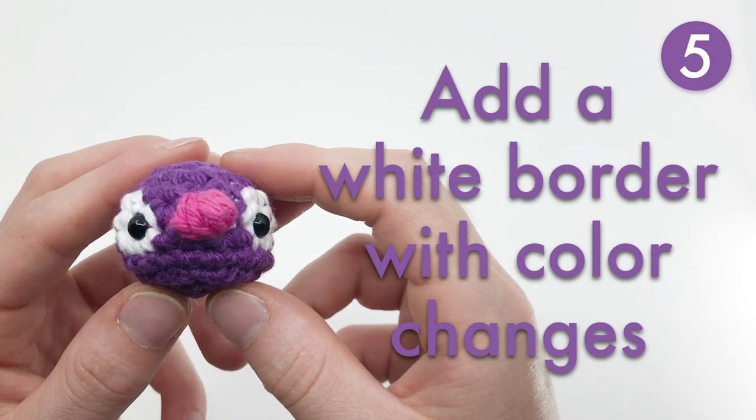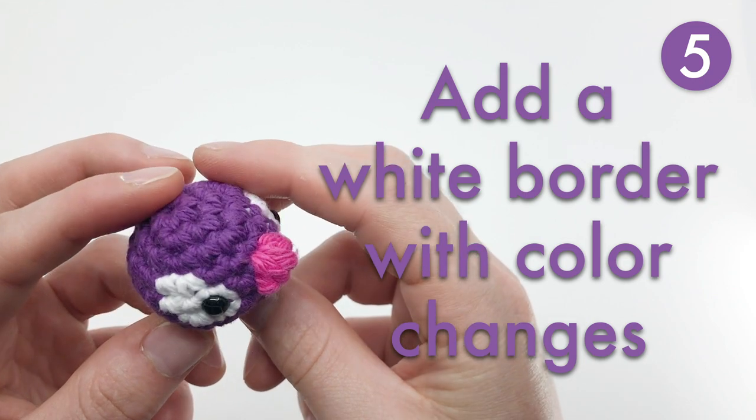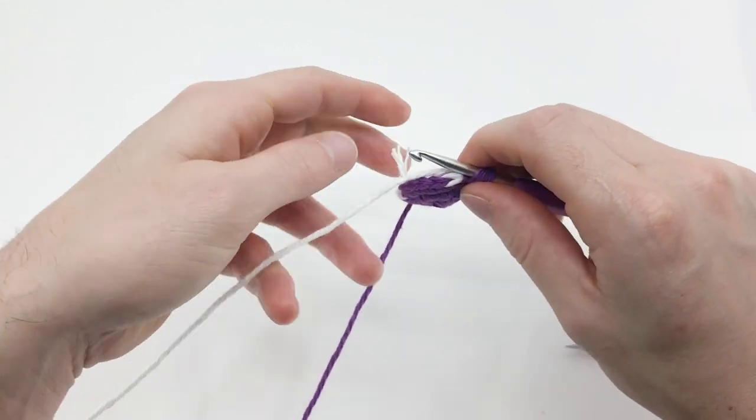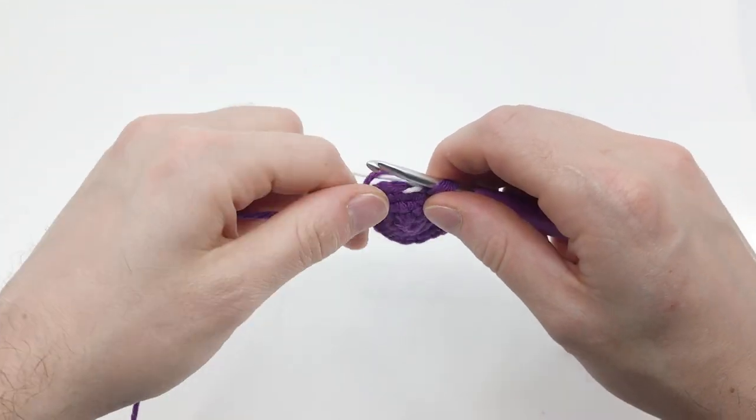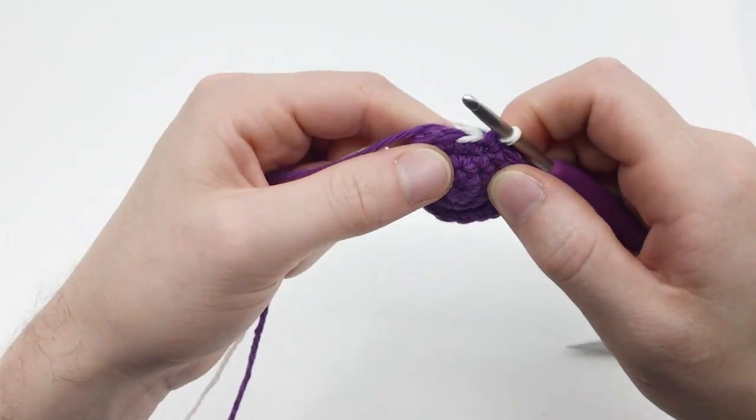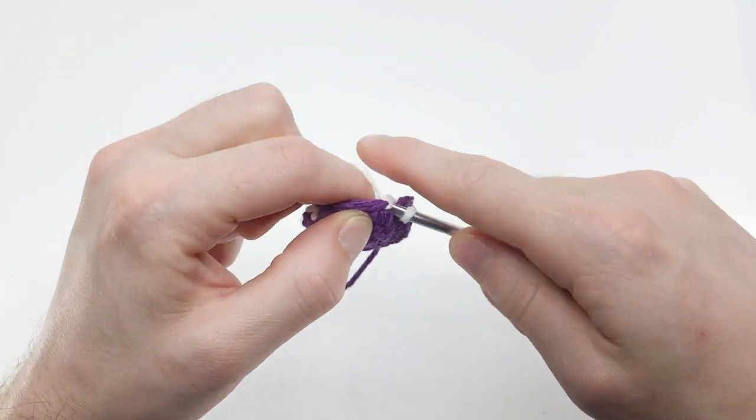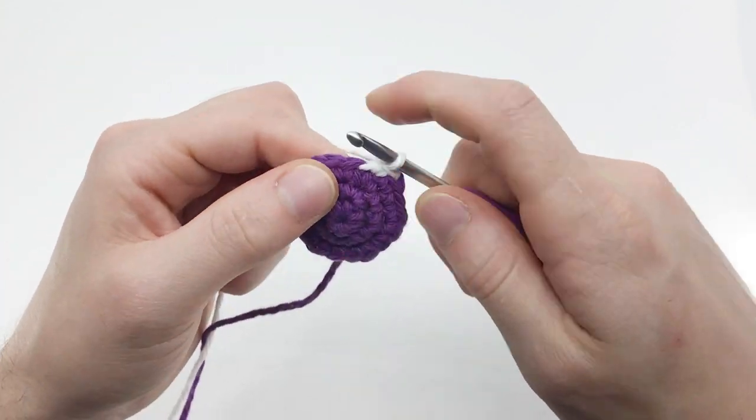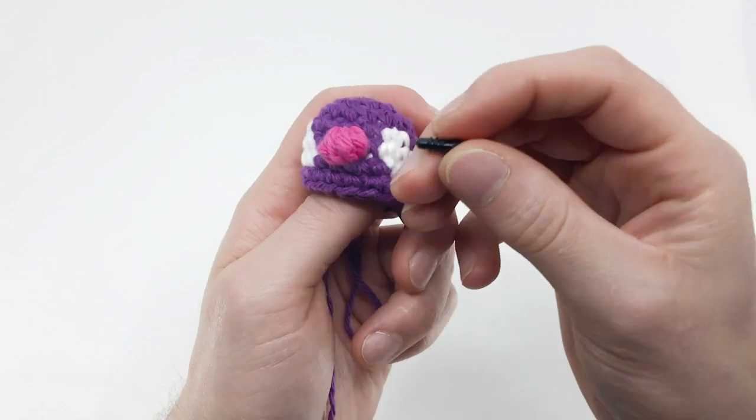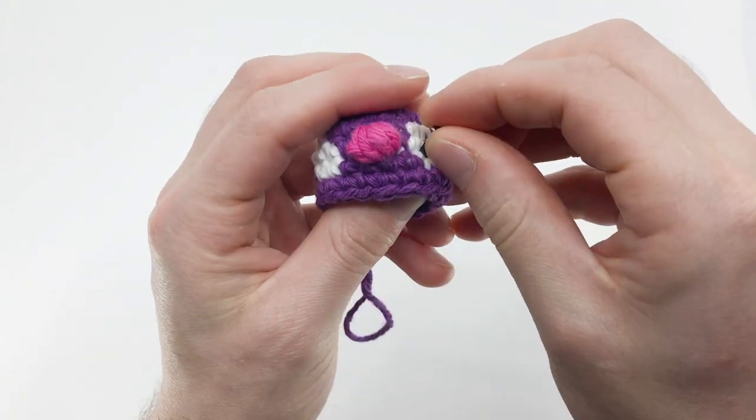Add a white border to your eye with color changes. This is one of the cooler ways to customize your eyes in my opinion, and something that we'll be discussing in future videos for sure. By doing color changes and using white stitches while crocheting your piece, you can prep the white sclera of your character's eyes beforehand.